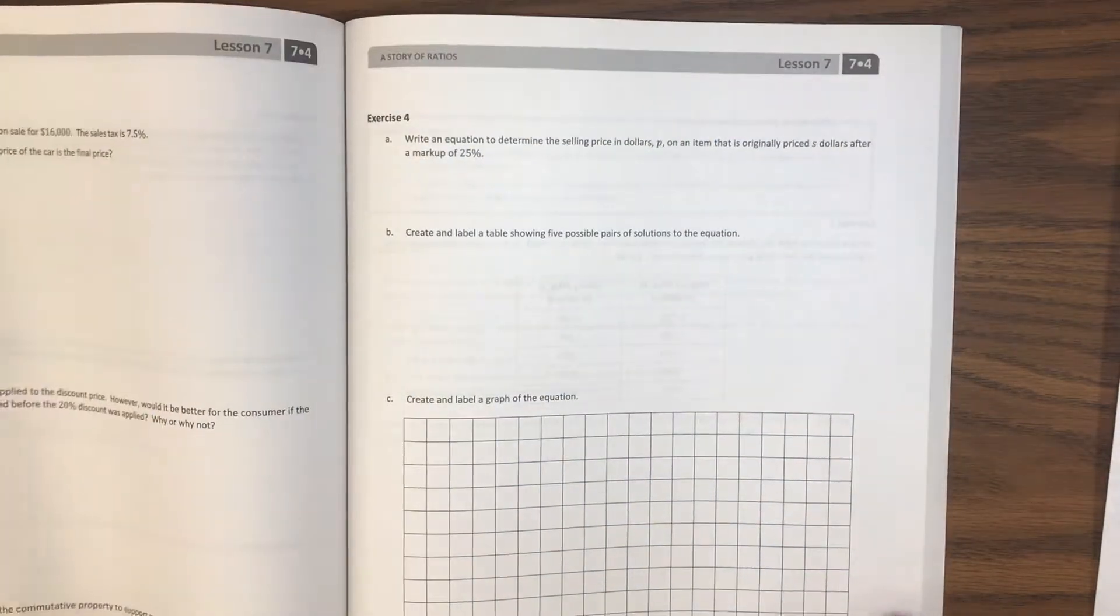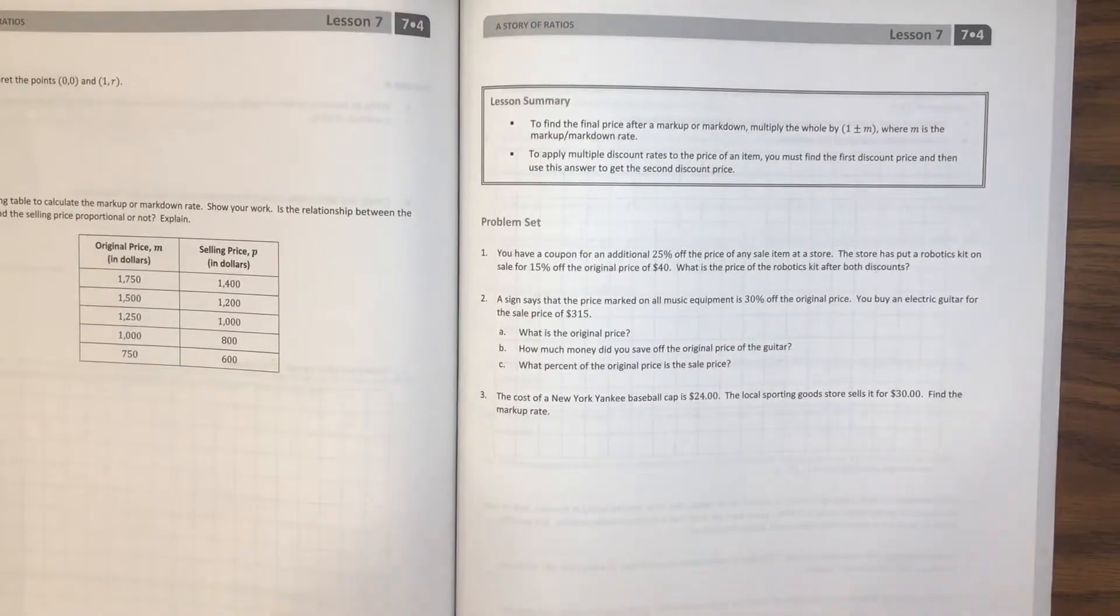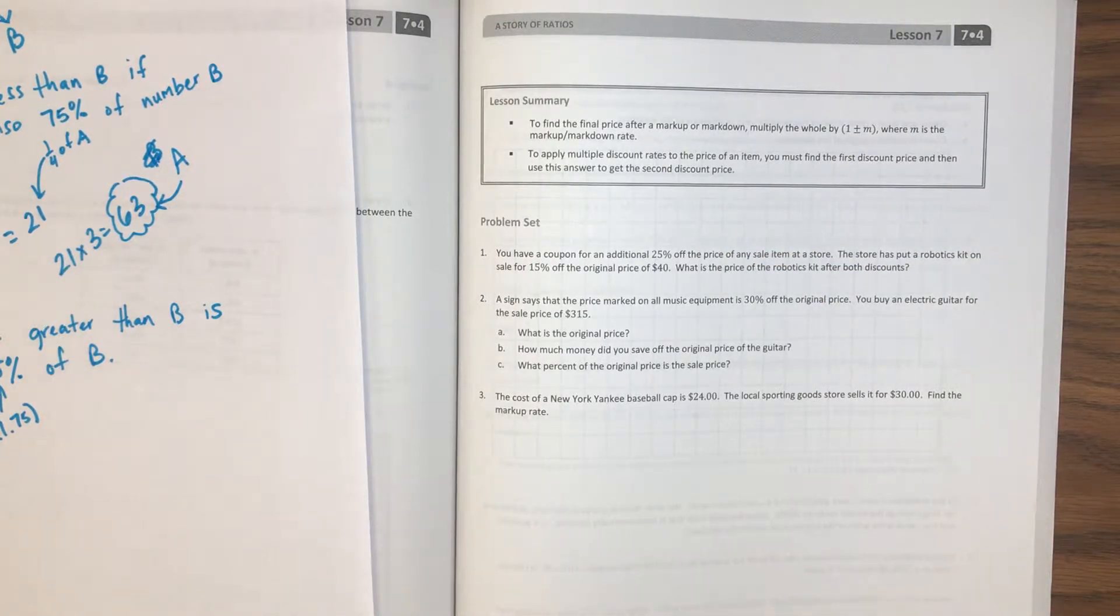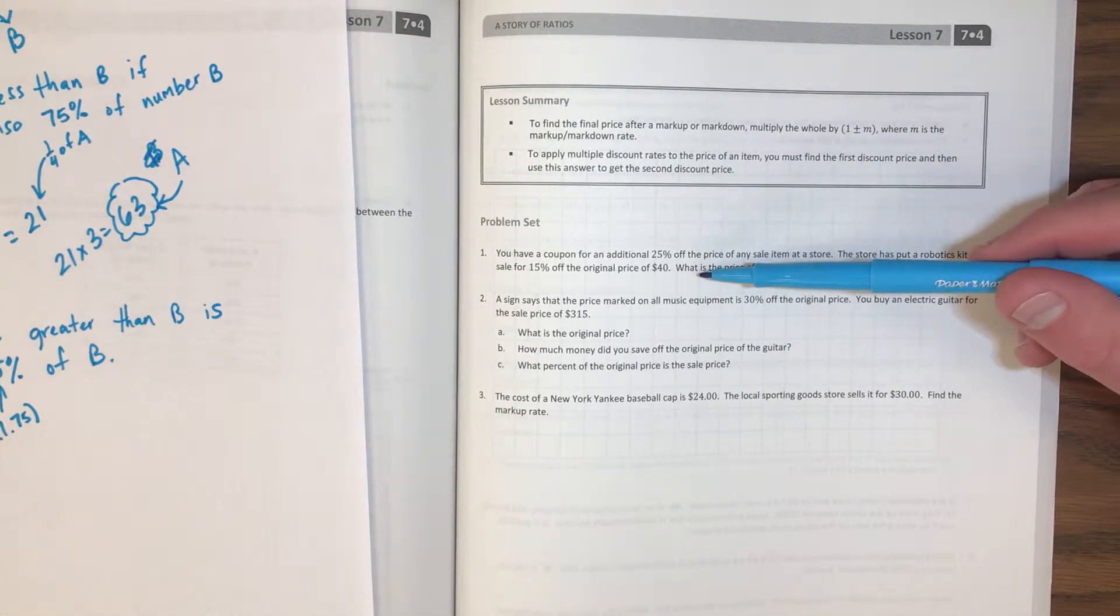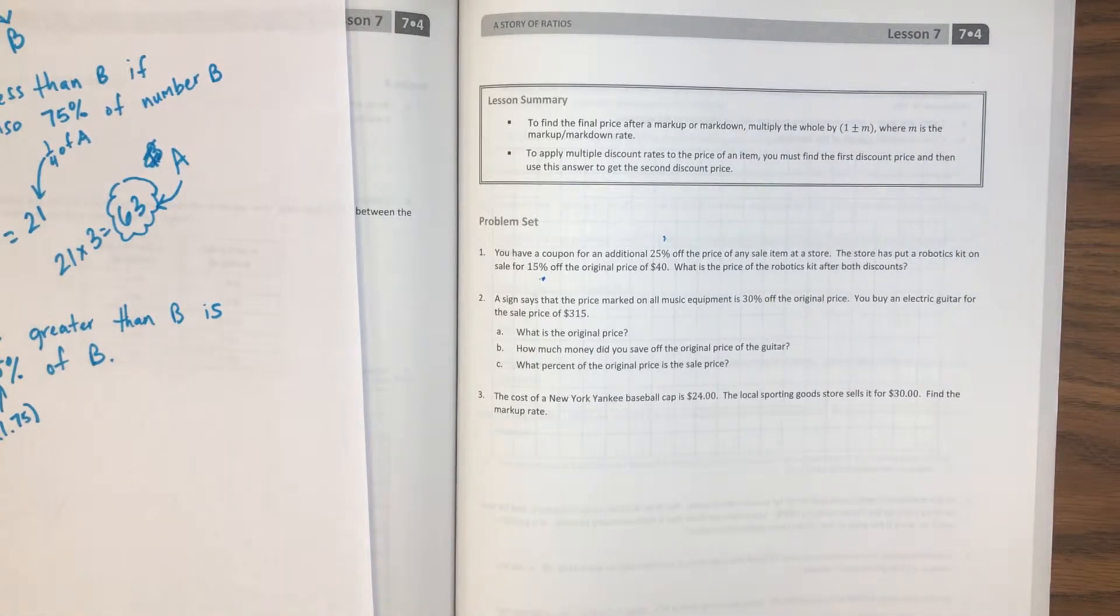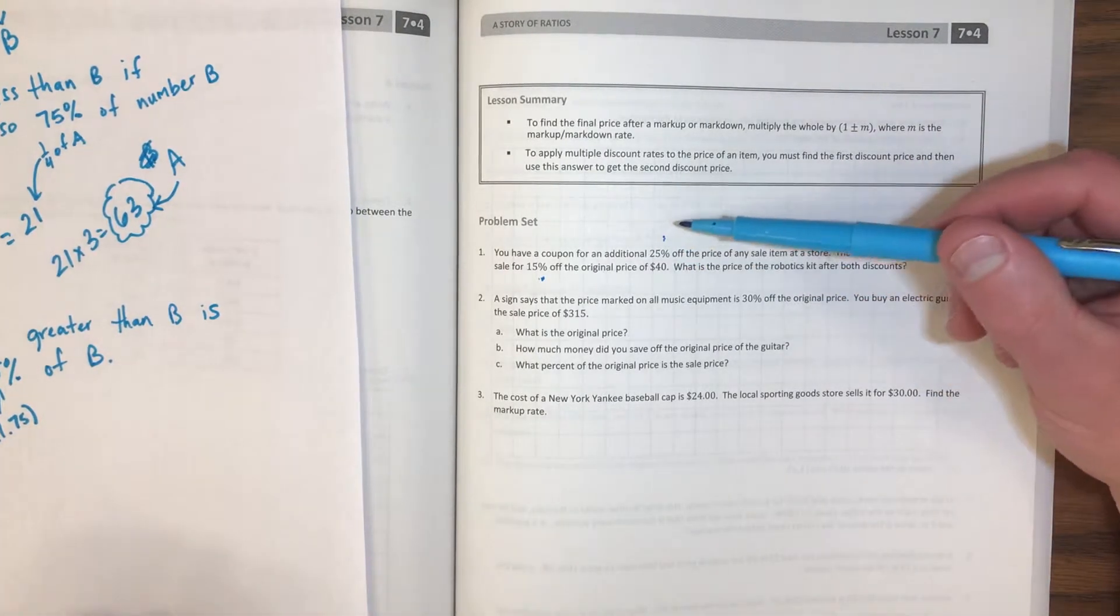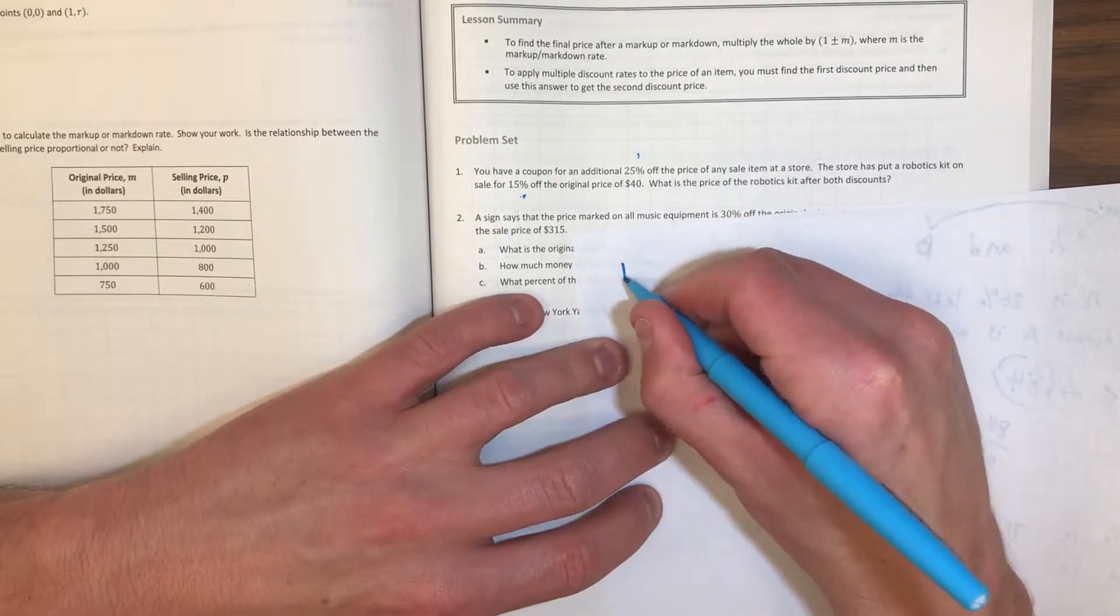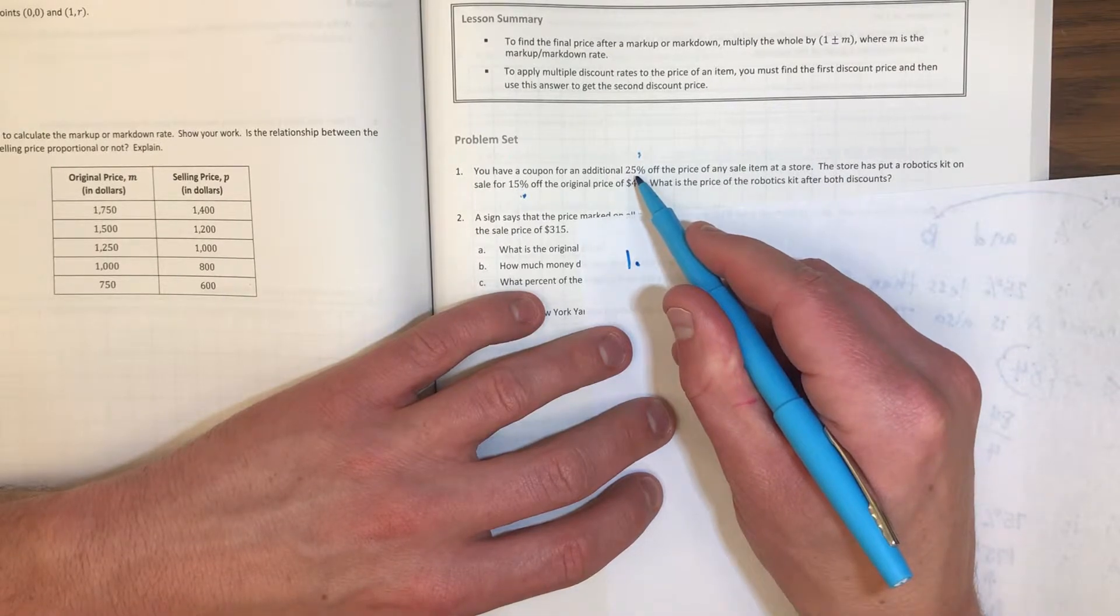Let's move on to Lesson 7 problem set. Only three questions. So it says: You have a coupon for an additional 25% off the price of any sale item at a store. The store has put a robotics kit on sale for 15% off the original price of $40. What is the price of the robotics kit after both discounts? Most stores don't let you do this - take a discount off of something that's already discounted - but whatever. So they want us to discount this $40 robot by 15% for a sale and then by another 25% after that for the coupon.